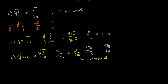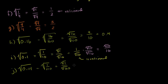Let's do j: square root of 0.01. This is the same thing as the square root of 1 over 100, which equals the square root of 1 over the square root of 100, which equals 1 over 10, or 0.1. This is clearly rational — it can be expressed as a fraction.